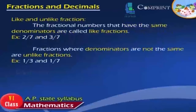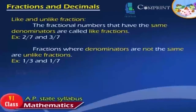Like and Unlike Fractions. Fractional numbers that have the same denominators are called like fractions. Example: 2 by 7 and 3 by 7. Fractions where denominators are not the same are unlike fractions. Example: 1 by 3 and 1 by 7.